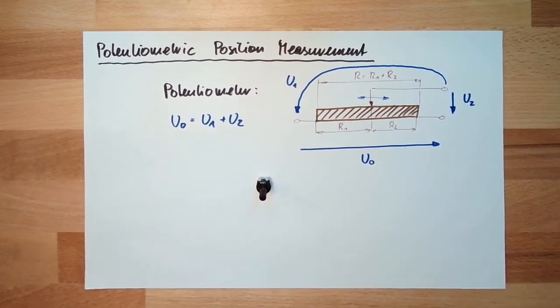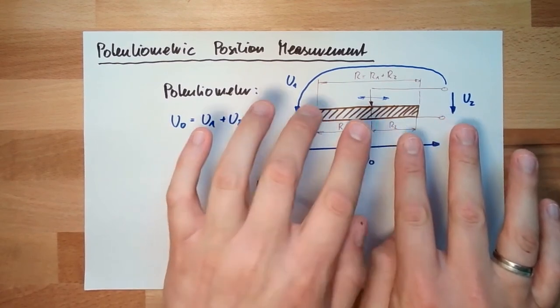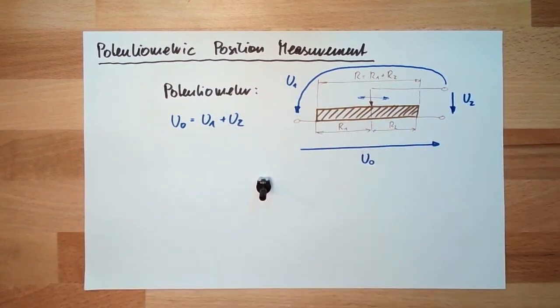Potentiometric position measurement: I can measure both voltages, make the differential of them, and have higher sensitivity. We talked about this in a previous video, in the video about measurement structures.